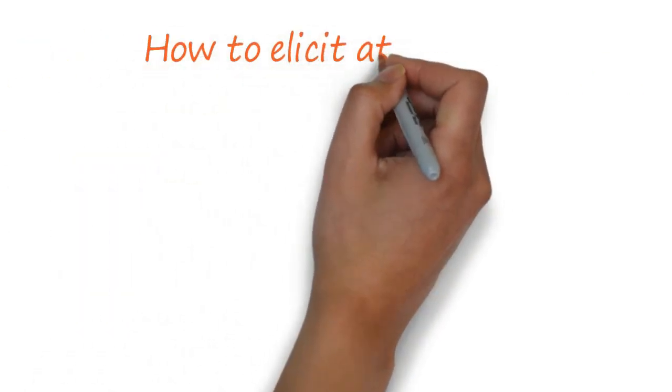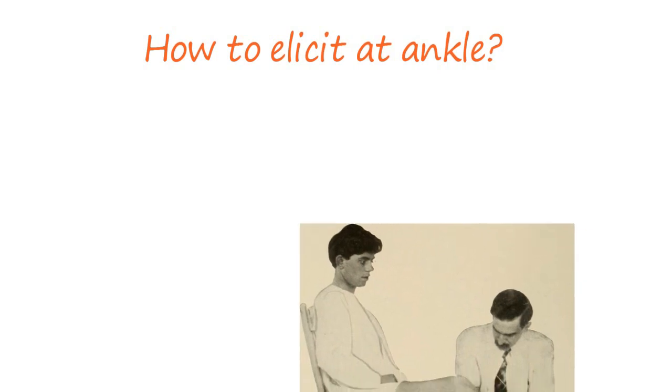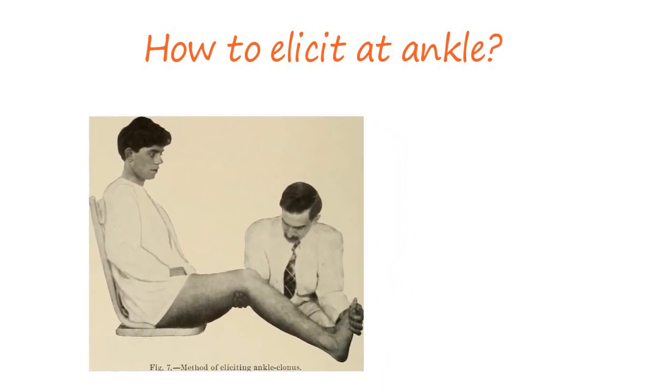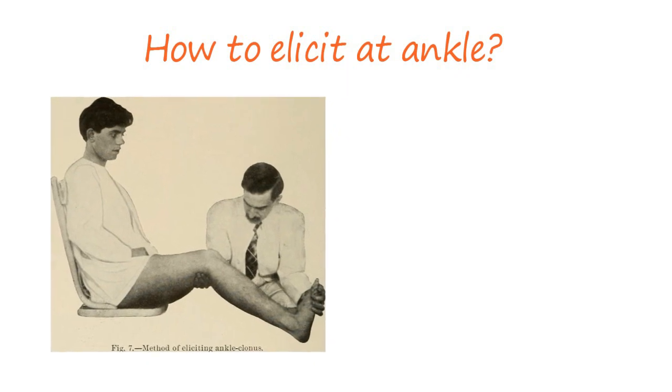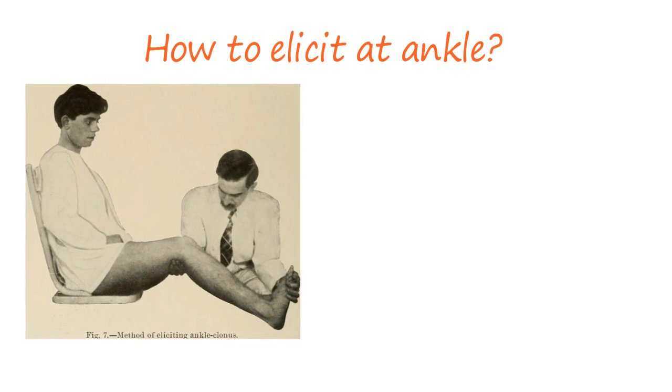How do we elicit ankle clonus? For ankle clonus, we should allow the patient to relax with the ankle passively flexed to about 90 degrees and the knee passively flexed if possible. This usually involves the examiner supporting the leg with the hand not performing the clonus.